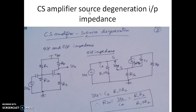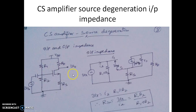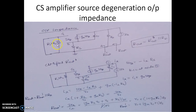Now we shall see the input and output impedances of the source degeneration CS amplifier. In this circuit there is a resistor RS acting as the source degeneration resistor. To find the input impedance, we open circuit the output and apply Vx at the input. The ratio Vx/Ix gives R1 parallel R2. So the input impedance of the source degeneration CS amplifier is R1 parallel R2.